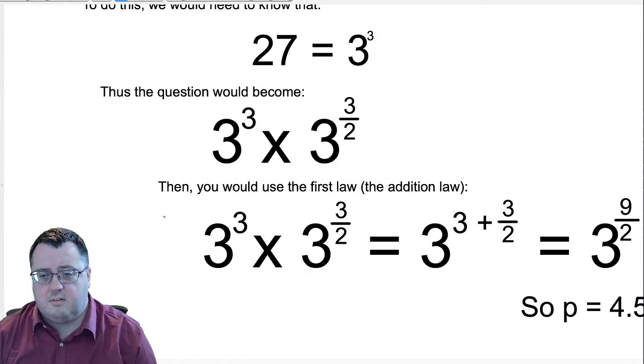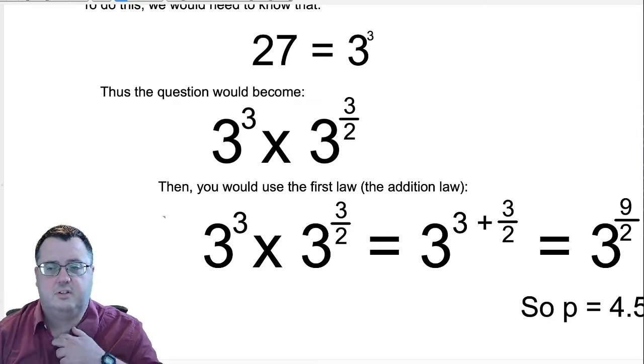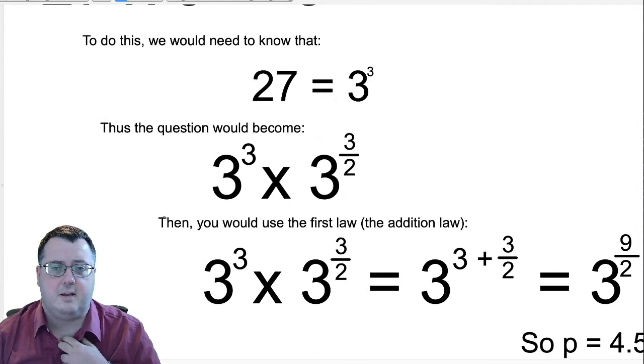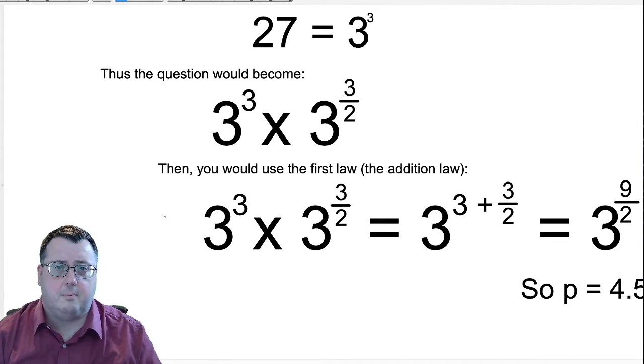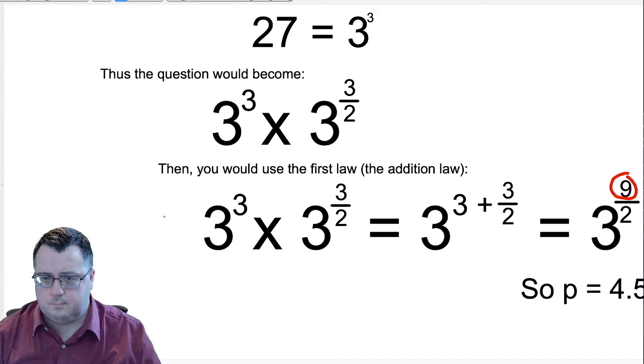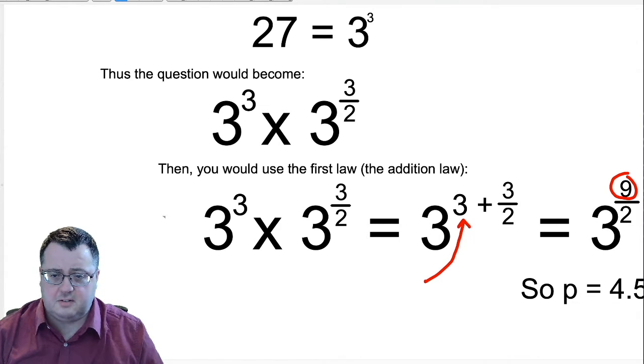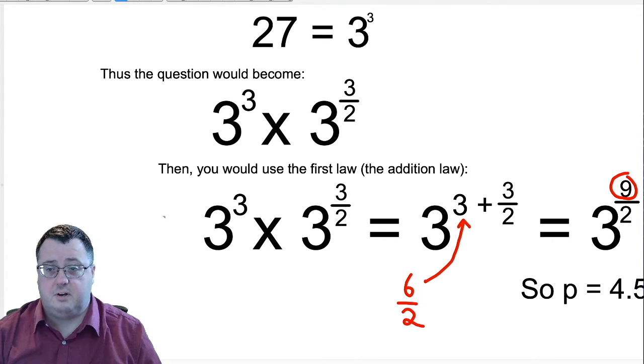So you would get 3 to the 3 plus 3 over 2, which equals 9 over 2, and 9 over 2 is 4.5. So the value of p is 4.5. But you're probably wondering, well, how did I get this value of 9? Well, that is everything to do with the value of what this 3 is. So 3 here is 6 over 2. Simple. 6 divided by 2 is 3. And then if I add the 6 and the 3 together, that will give me 9. It's basic fractional conversion.